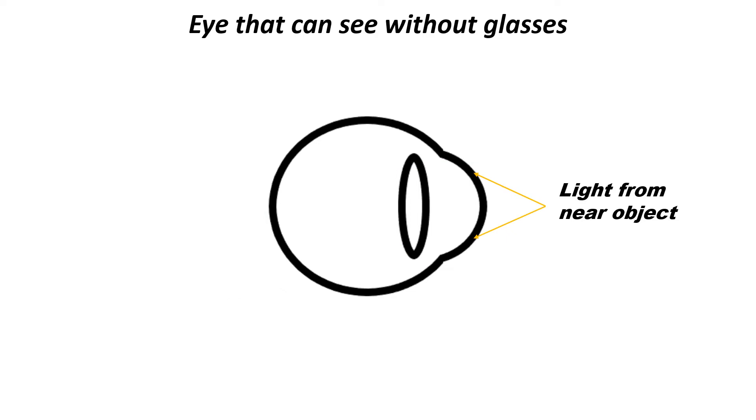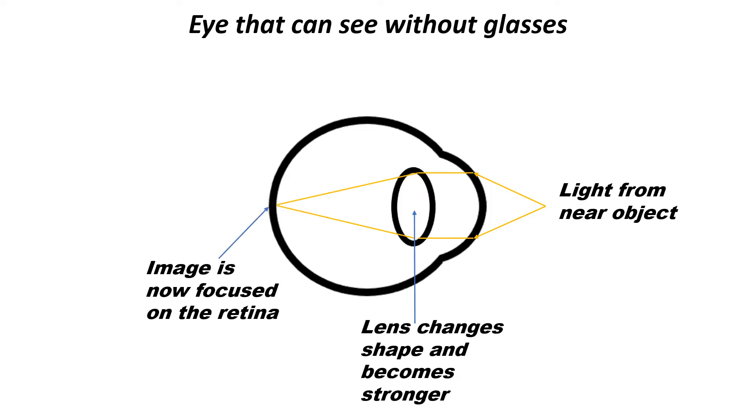But when you are looking at a near object, such as a book or iPad screen, because this is much closer to you, the lens will not be powerful enough to focus the light onto the retina. So the eye exerts focusing effort, and this makes the lens change shape and become more powerful, so that the light from the near object is focused onto the retina. This is in an eye that doesn't need glasses.